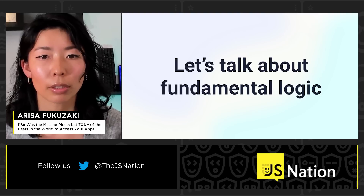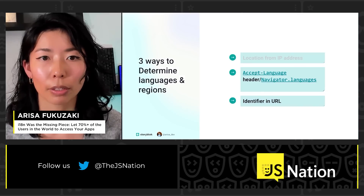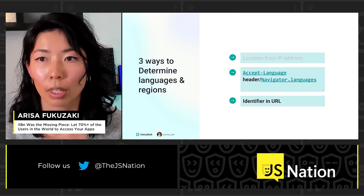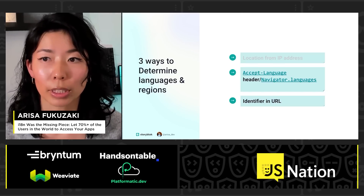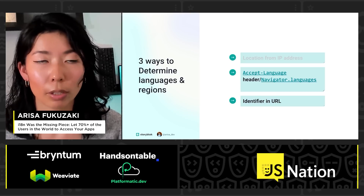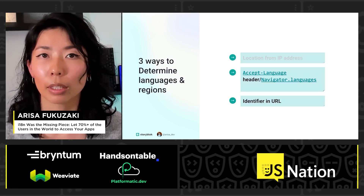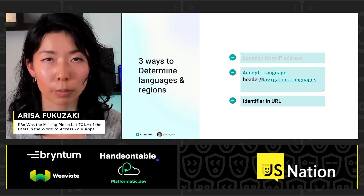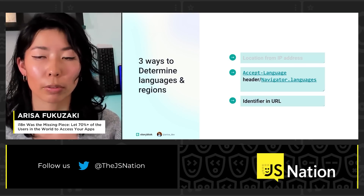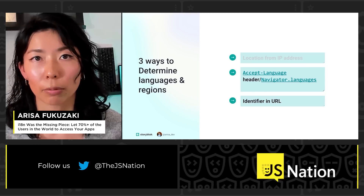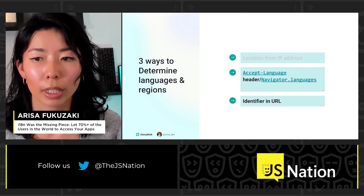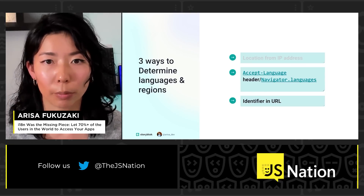Let's talk about the fundamental logic. There are three ways to determine languages and regions. First, there is a way to detect location from the IP address, which we are not going to cover in this talk. Second, here's the example of respecting what users have configured in their browser settings — which language to choose. And lastly, there is a way to identify locale in the URL.